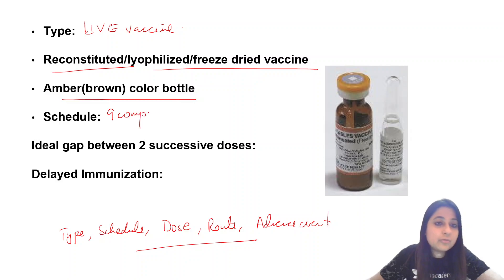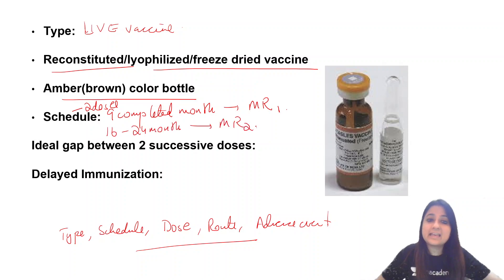When is it given? The schedule: it's given in two doses. At nine completed months, you give the first dose as Measles-Rubella vaccine MR1, and the second dose at 16 to 24 months as MR2. Altogether, we give two doses.